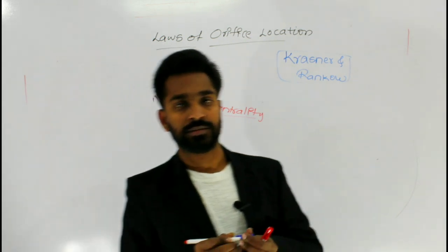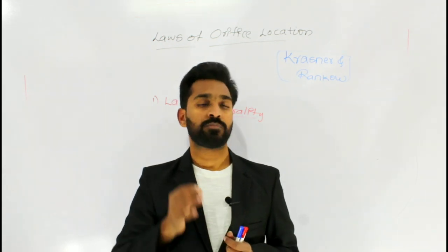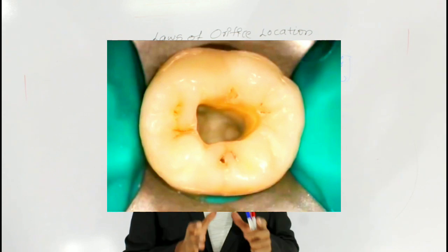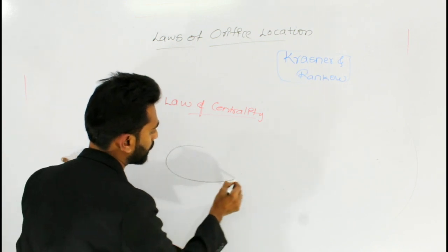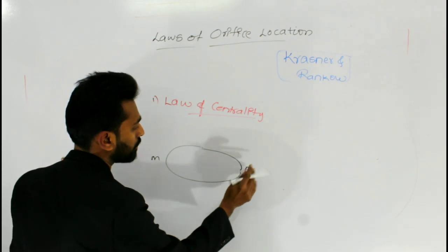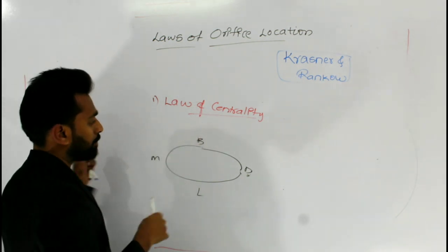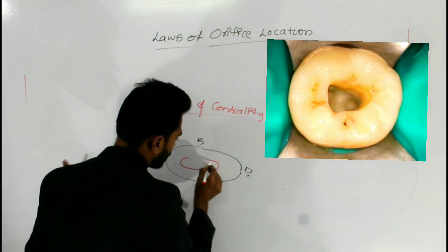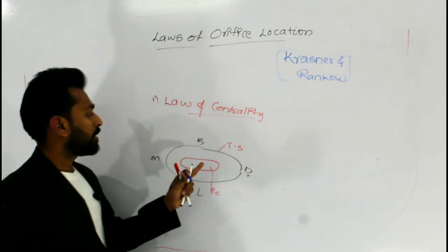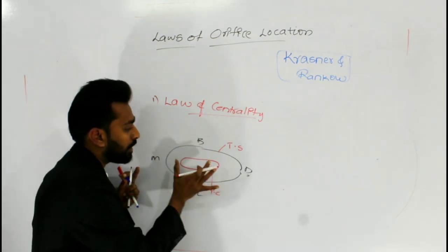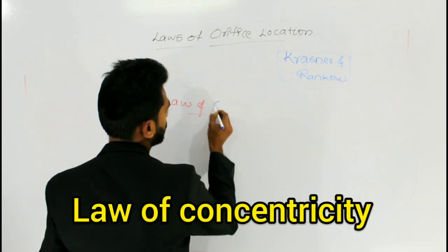The law of centrality states that the pulp chamber is always — or absolutely — located at the center of the tooth surface at the level of the CEJ. If you take a cross section at the CEJ, looking at the mesial, distal, buccal, and lingual surfaces, the pulp chamber is always located at the center of the tooth surface. This is the law of centrality.